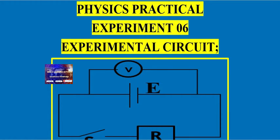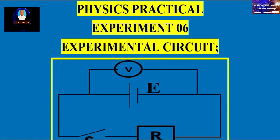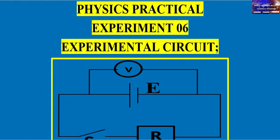Welcome to our physics practical session. Today we proceed with experiment number six, apart from experiment number one up to number five. We will see the aim of the experiment, the nature of the graphs, how to calculate the slope, and how to calculate the value of the equation.